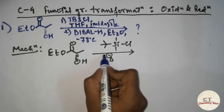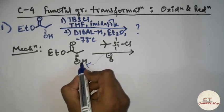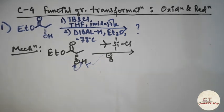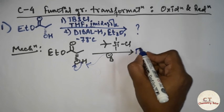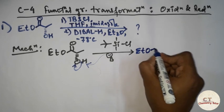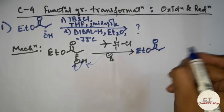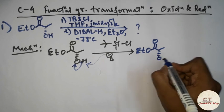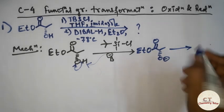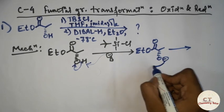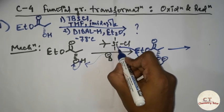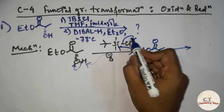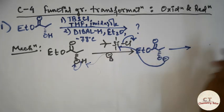Now, consider this base will have to abstract a proton. It is the most acidic proton, so it will abstract this proton and the negative charge will be on the oxygen atom. This oxygen is then going to attack at the silicon, and chloride — being a good leaving group — will leave.